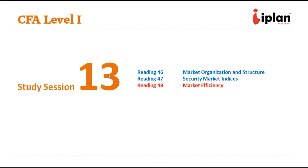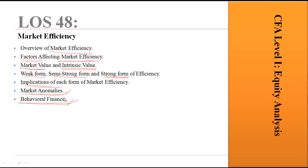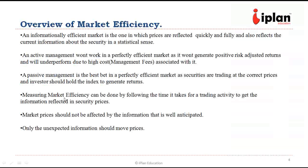Let us move to the last reading of study session 13, market efficiency. Under this LOS we are going to look at the broad idea of market efficiency, the various factors which affect market efficiency, then compare market value and intrinsic value. We will look at the various kinds of market efficiency — weak form, semi-strong form, and strong form — and their implications, then market anomalies and certain aspects of behavioral finance.